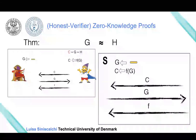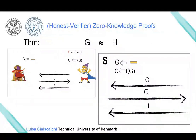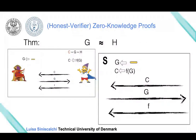Note that here the coins for choosing G or H are sampled by the simulator, because we are considering only an honest verifier.